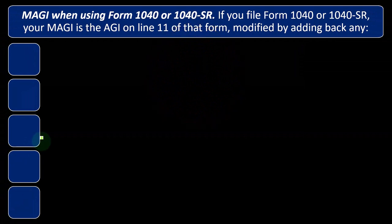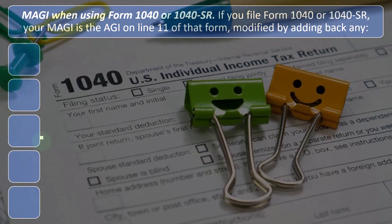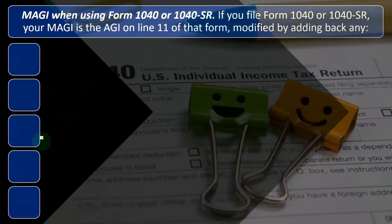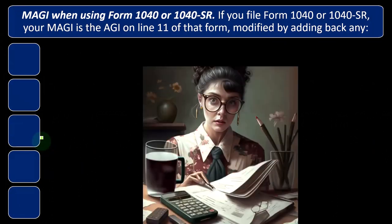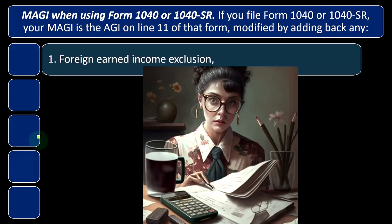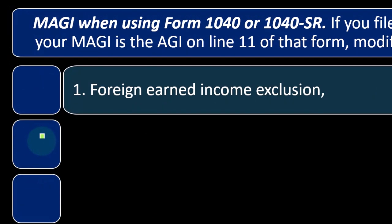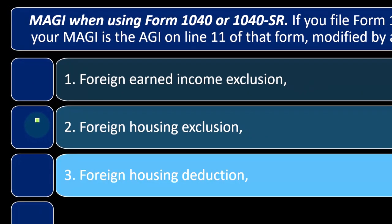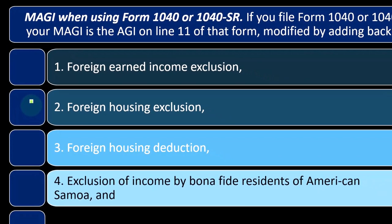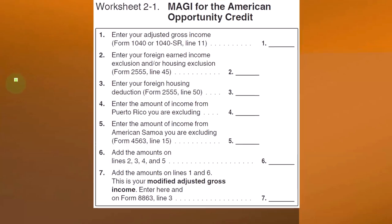When using Form 1040 or 1040-SR, your MAGI is the AGI on line 11 of that form, modified by adding back any: (1) foreign earned income exclusion, (2) foreign housing exclusion, (3) foreign housing deduction, (4) exclusion of income by bona fide residents of American Samoa, and (5) exclusion of income by bona fide residents of Puerto Rico.